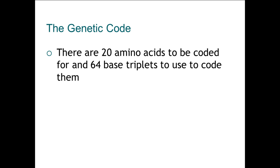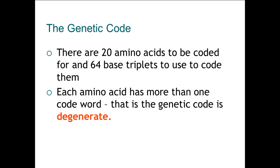Because there are only 20 amino acids but 64 base triplets that could code for them, different triplets can code for the same amino acid. There is a specific word to describe this: degenerate. For instance, the code AAT might code for a certain amino acid, and the code AAC might also code for the same amino acid — that is what degenerate means.